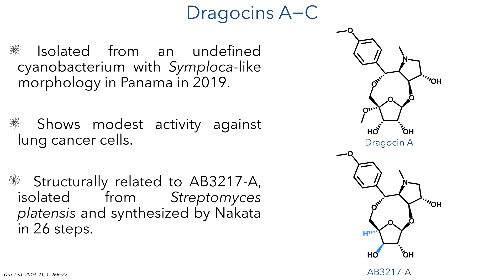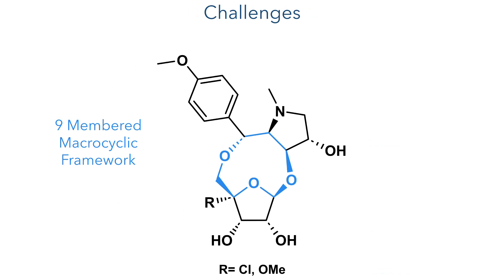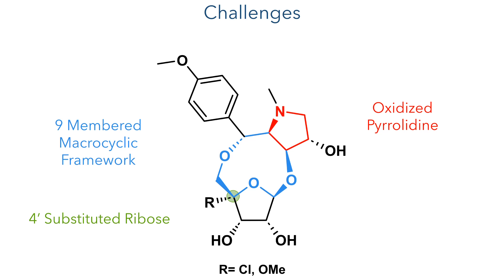These structures differ in their stereochemistry at the 3' position and also the oxidation at the 4' position. These compounds are quite unusual, and they feature a nine-membered macrocyclic framework bearing an oxidised pyrrolidene moiety. The most unique feature of these compounds is the oxidation at the 4' position, which has only been observed once before in a natural product. In Dragacin A, this bears a methoxy group, while in B and C, a chlorine atom is present.